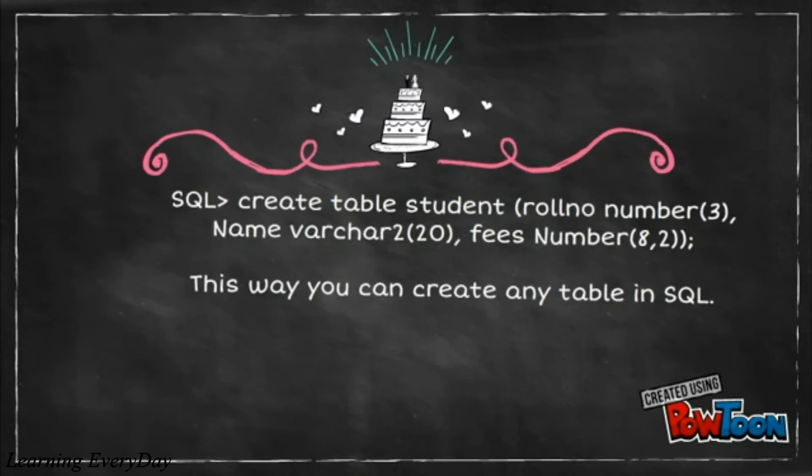Let's have an example. In this case we have student as name of the table. Roll number, name and fees are the three columns of the table student. The data types of all the columns are as shown on the screen. By this you can create any table in SQL.